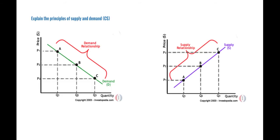The next performance indicator is to explain the principles of supply and demand. Here you can see the supply and demand curves. The law of demand states that if all other factors remain equal, the higher the price of a good, the less people will demand that good — in other words, the higher the price, the lower the quantity demanded. The amount buyers purchase at a higher price is less because as the price goes up, so does the opportunity cost of buying that good. As a result, people will naturally avoid buying a product that will force them to forgo the consumption of something else they value more.